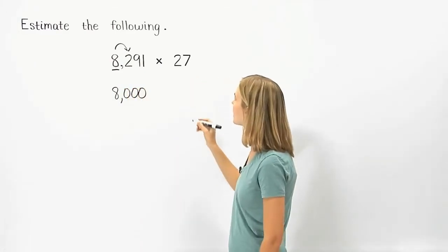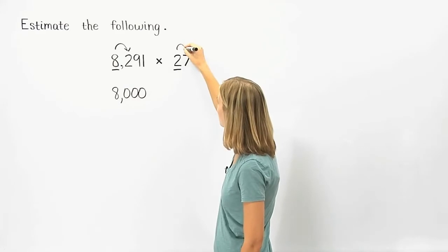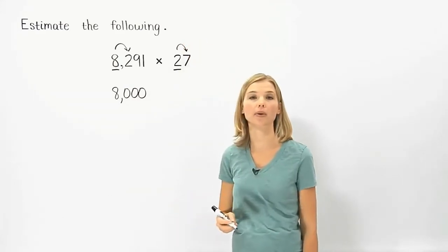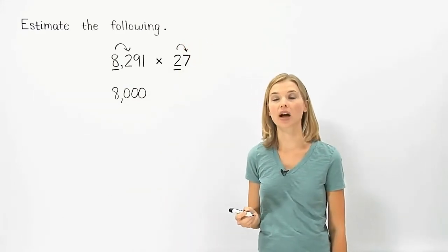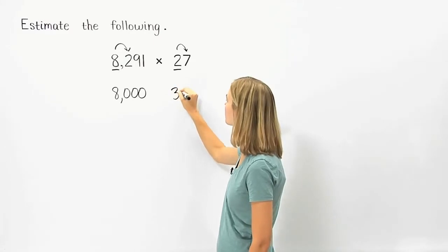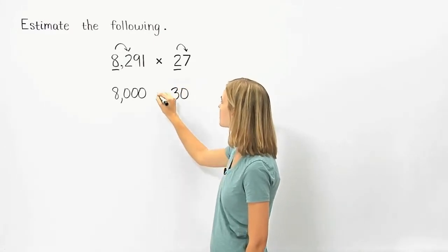To round 27 to the nearest ten, the 7 to the right of the rounding place tells us to round up. So 27 rounds up to 30. So we have 8,000 times 30.